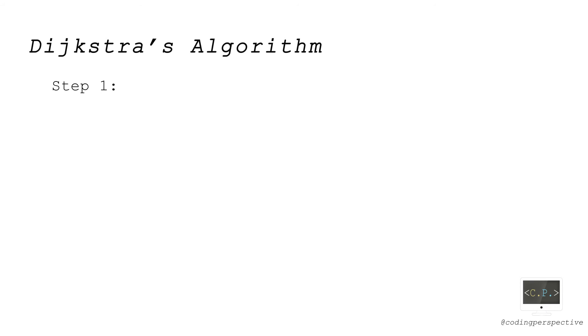In the first step of the algorithm, we mark all nodes as temporary. Then we assign the path lengths to infinity for each node excluding the source node. For the source node, the path length is zero.